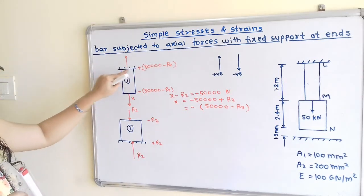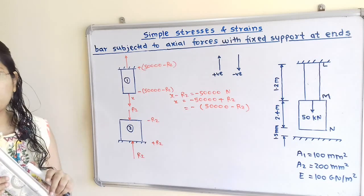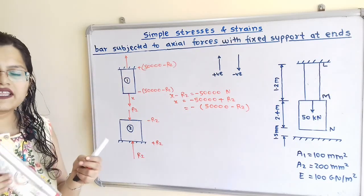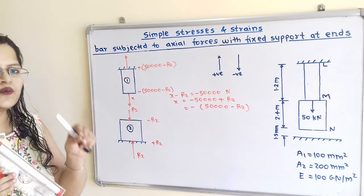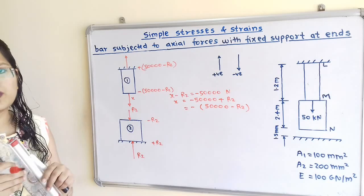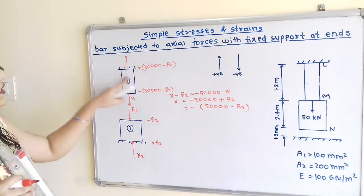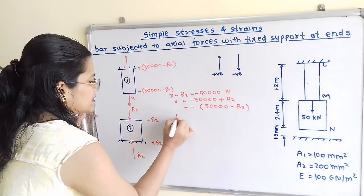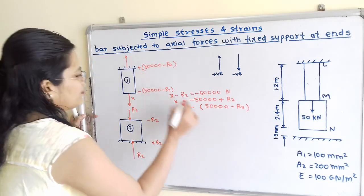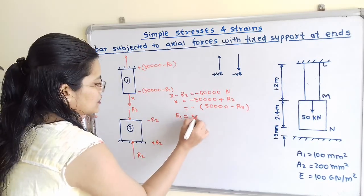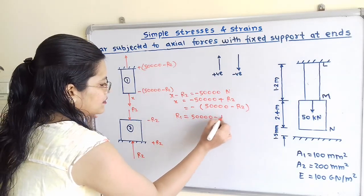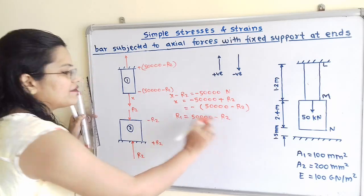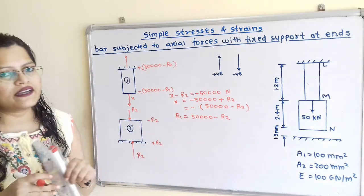If we observe, this is the upper fixed support, and the reaction at this point is equal to R1. From this we can say that R1 is equal to 50,000 minus R2. This is the relation between R1 and R2.